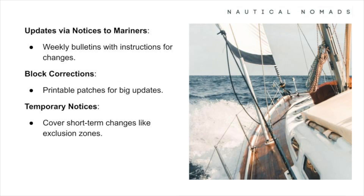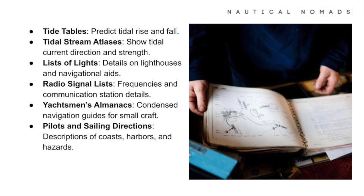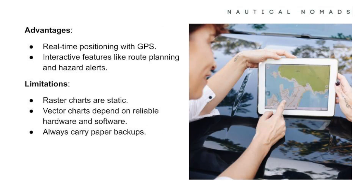Keeping charts up to date is essential, and tools like notices to mariners, block corrections, and temporary notices ensure your charts remain accurate and reliable. Supplementary tools like tide tables, tidal stream atlases, and lists of lights enhance navigation. Electronic charts are powerful tools for modern navigation but rely on technology — a backup paper chart is your safety net when systems fail. Nautical charts, whether paper or electronic, are the cornerstone of safe navigation. Keeping them updated and knowing how to use them effectively is essential for every mariner. Safe sailing!